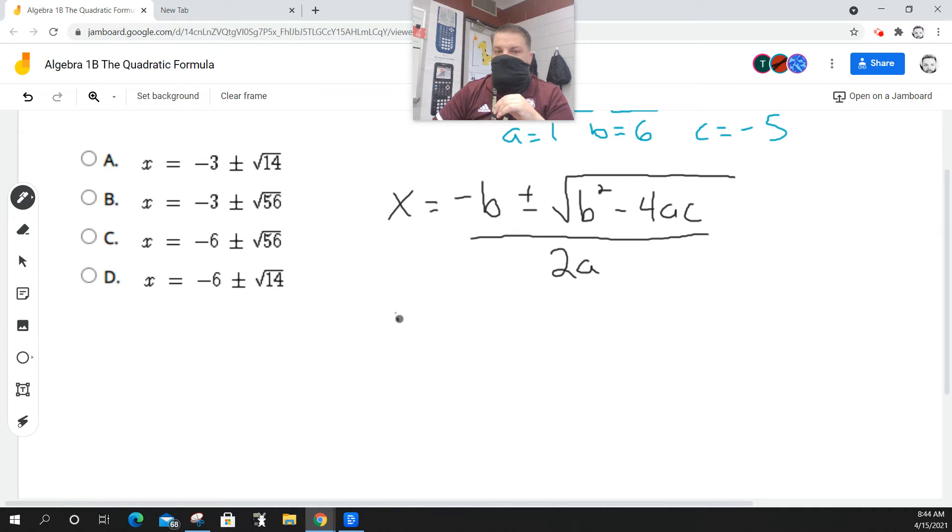So, minus, what's b? Six. Plus or minus the square root of b squared, which is just six squared. Minus four times a. What's a? One. Times c. What's c? Negative five.